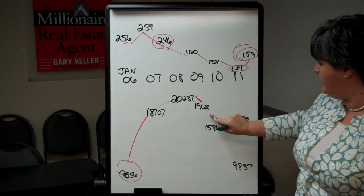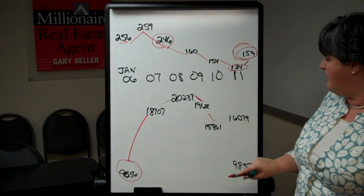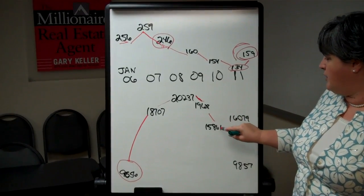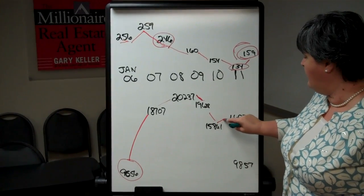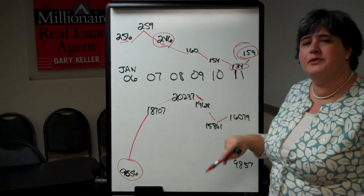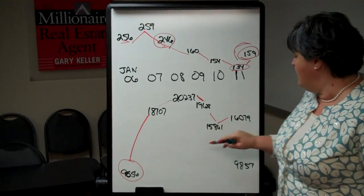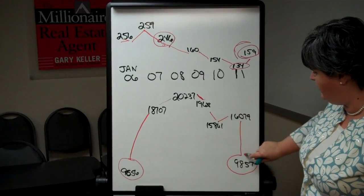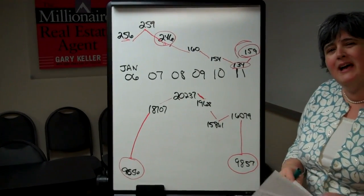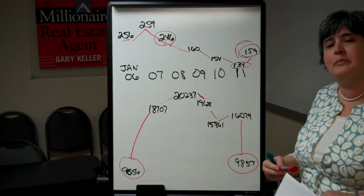Between 2009 and 2010, the inventory shrunk to 15,861. And then it went up slightly when all those REOs hit the market. And then look where we ended the year for 2011. We're back down to 9,857 homes on the market.